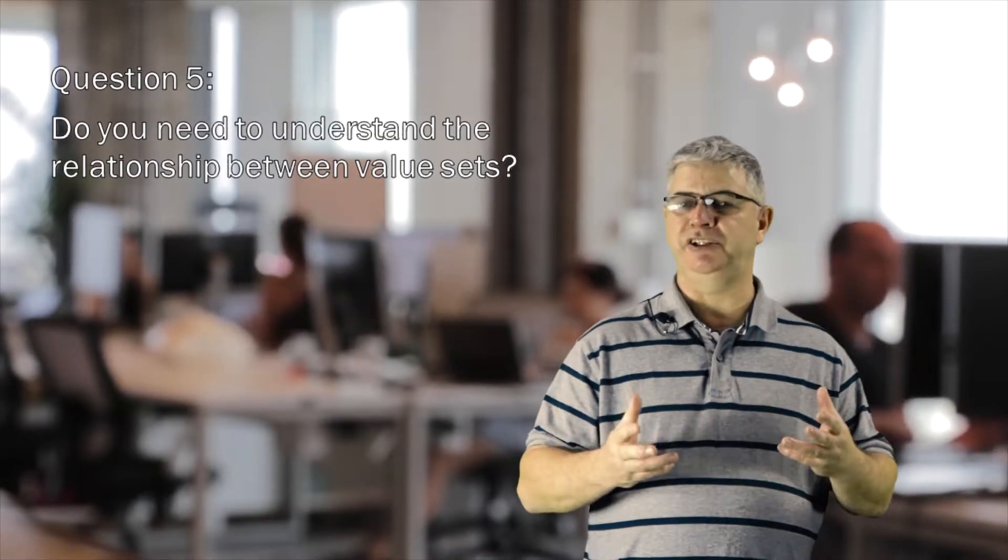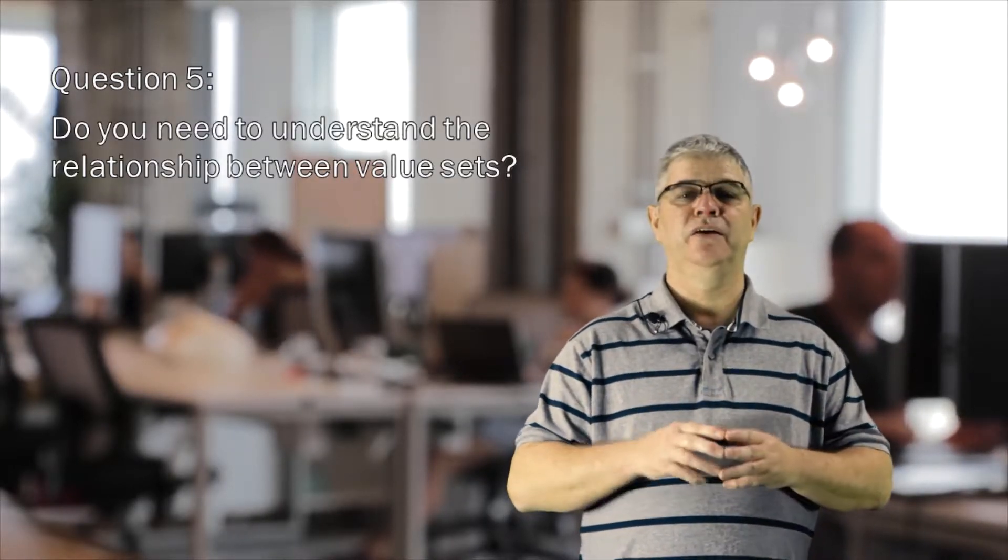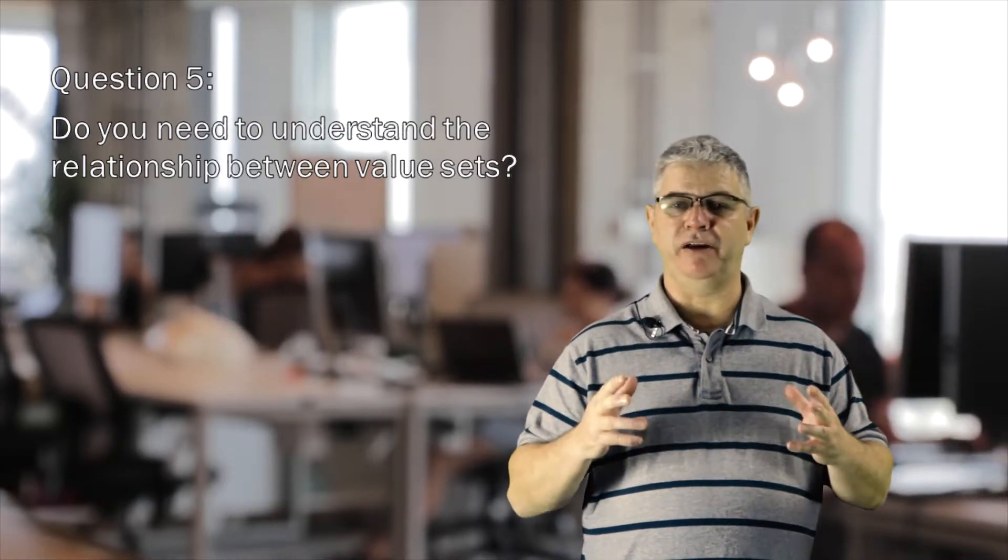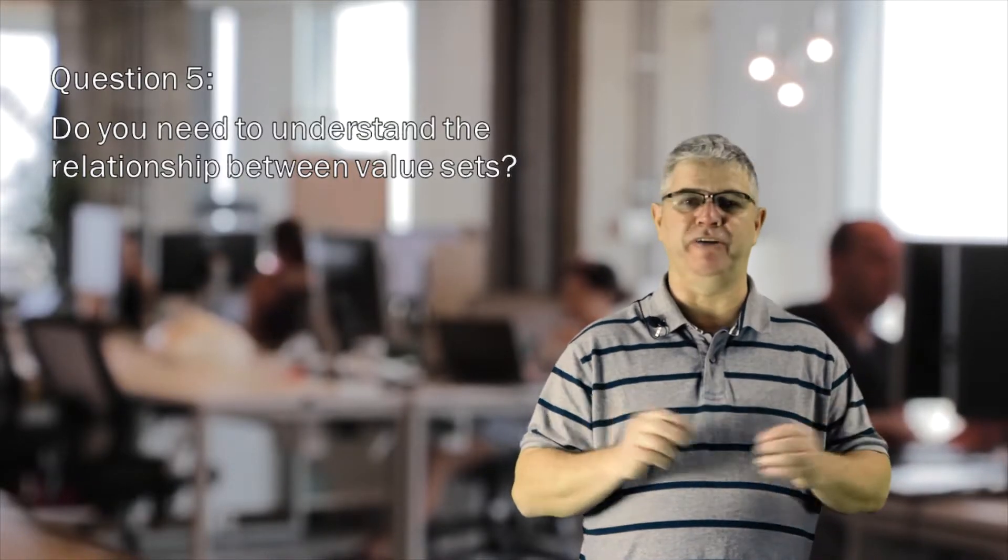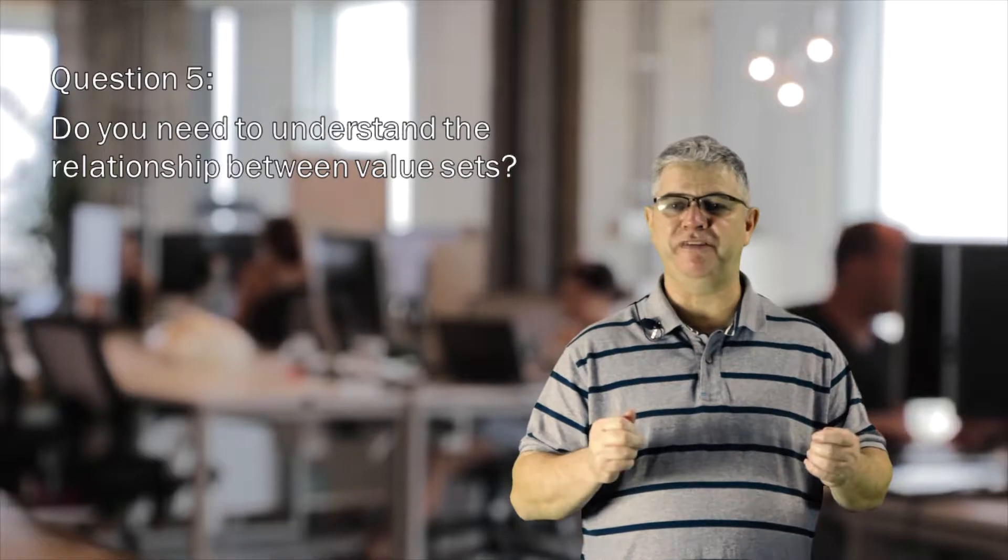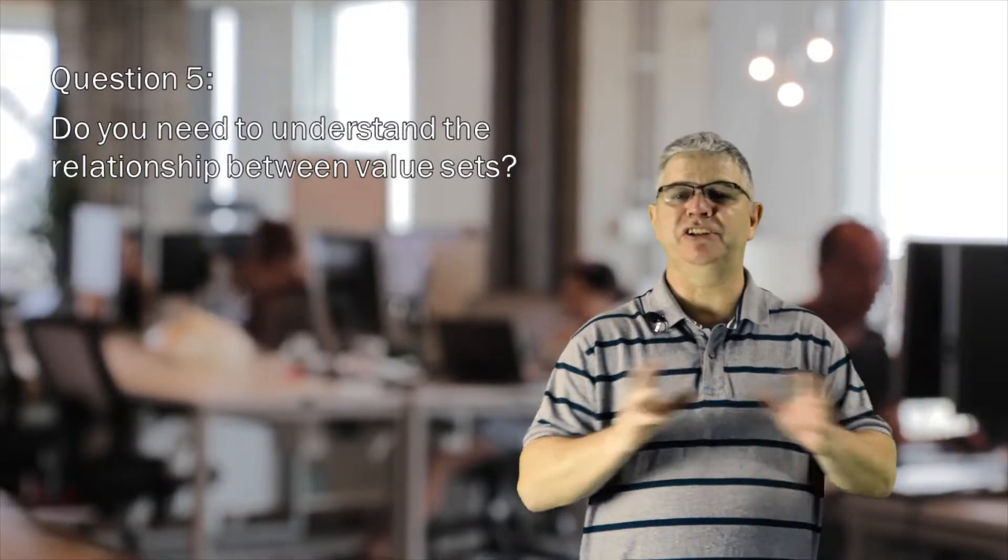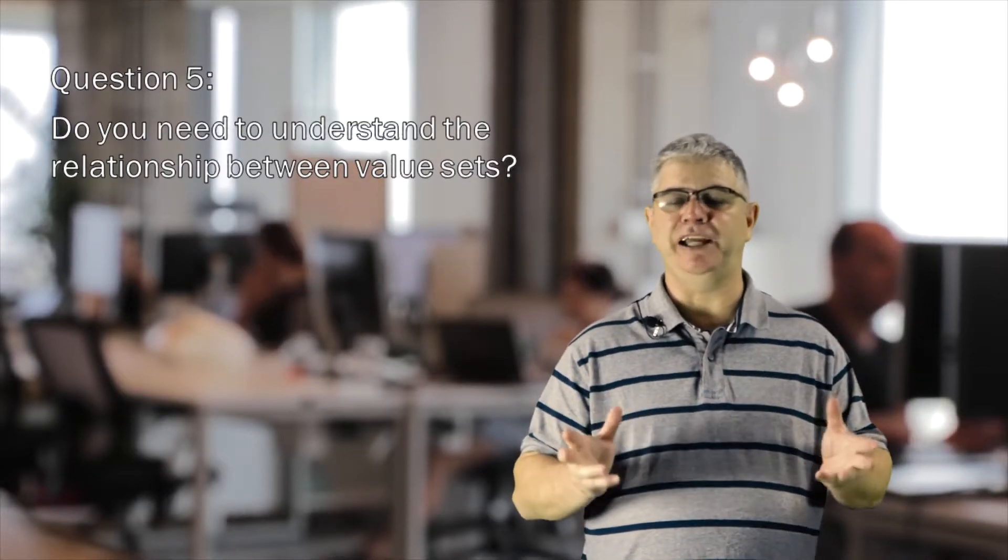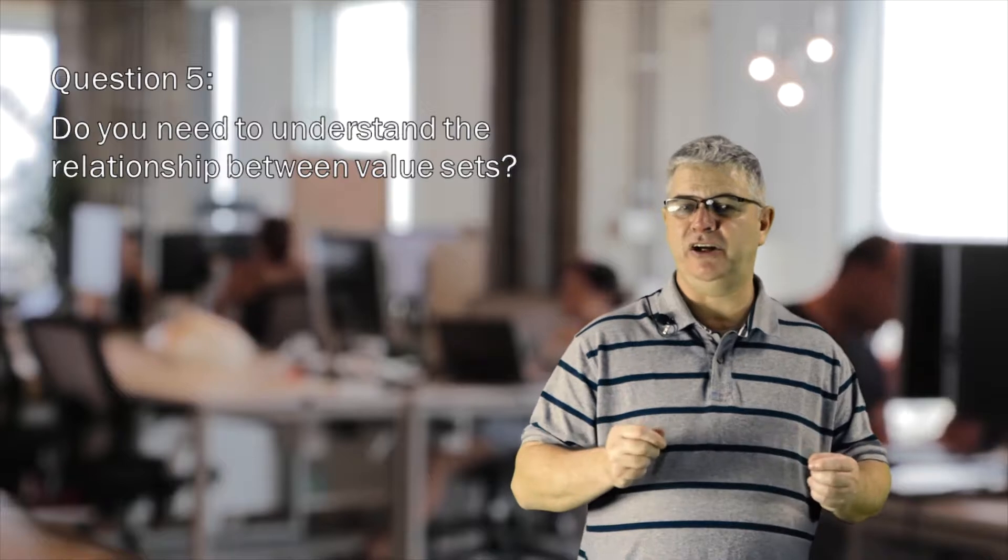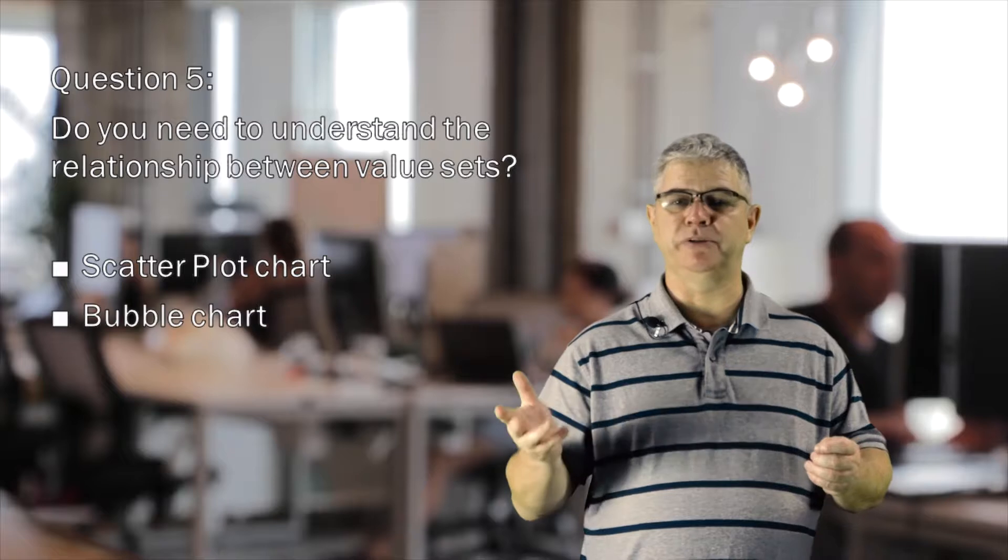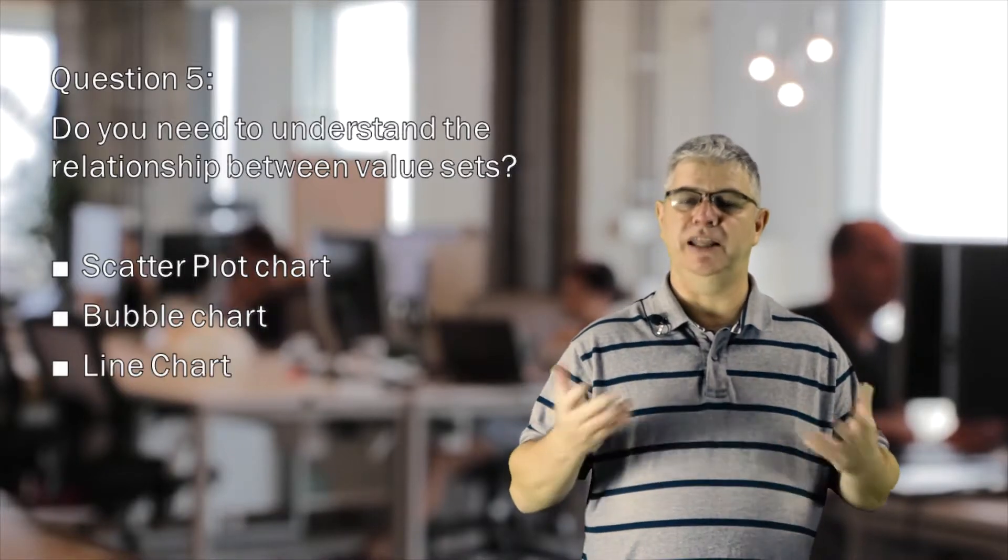The fifth and last question: Do you need to understand the relationship between value sets? Relationship charts are ideal for showing how one variable relates to one or several different variables. You might use this to show how something positively affects, has negative effects, or even has no effects on other variables. If you're trying to establish the relationship between things, then consider using one of these charts: a scatter plot chart, a bubble chart, or a line chart.